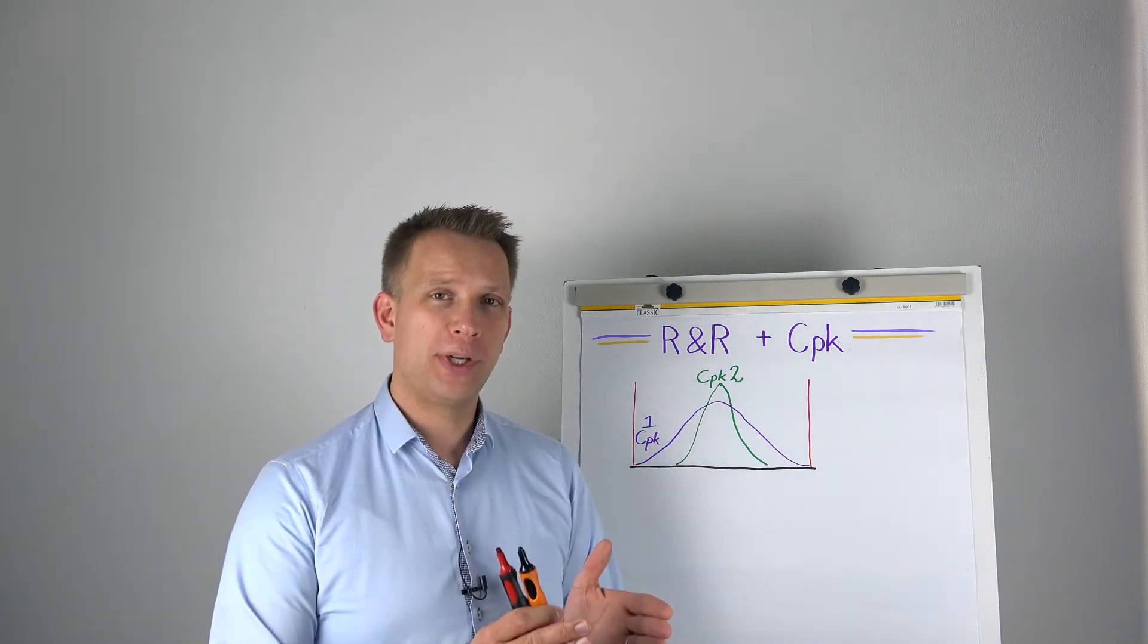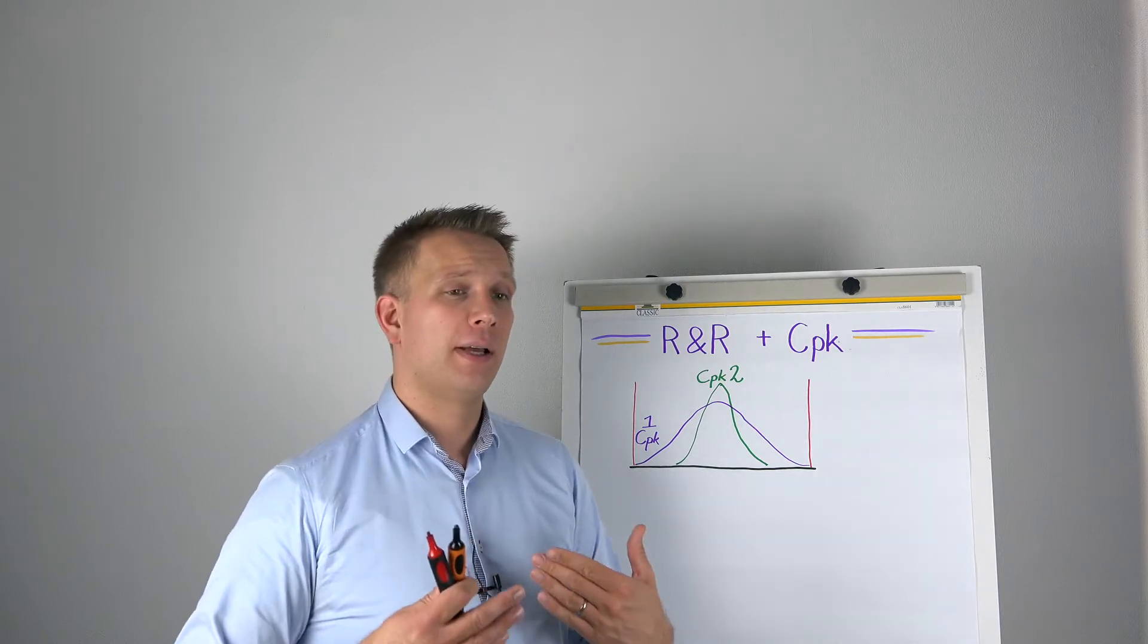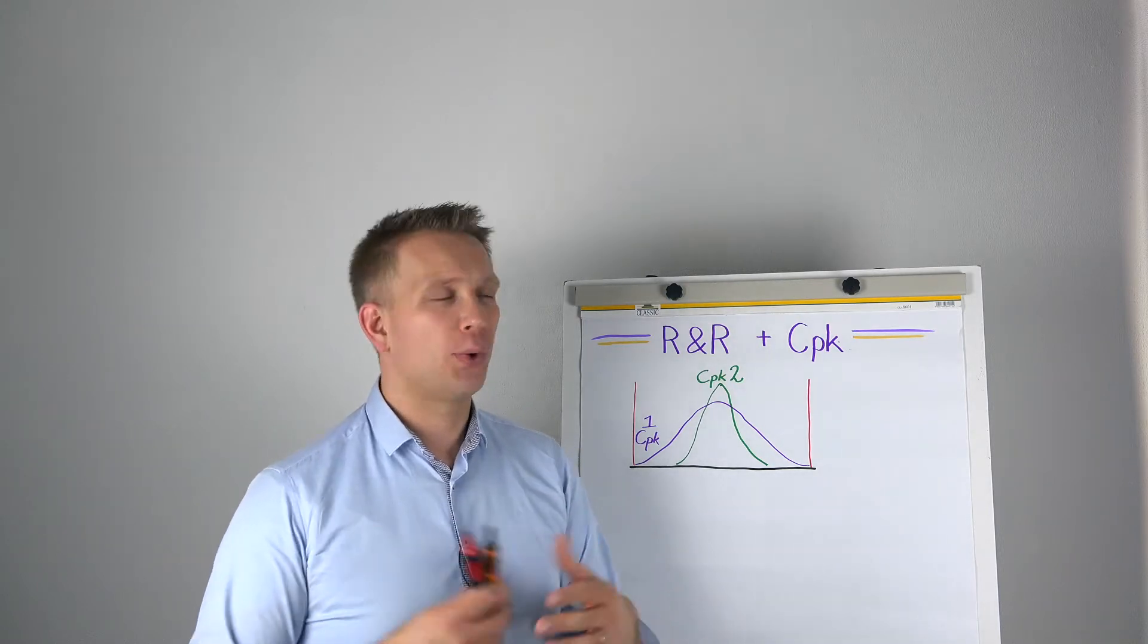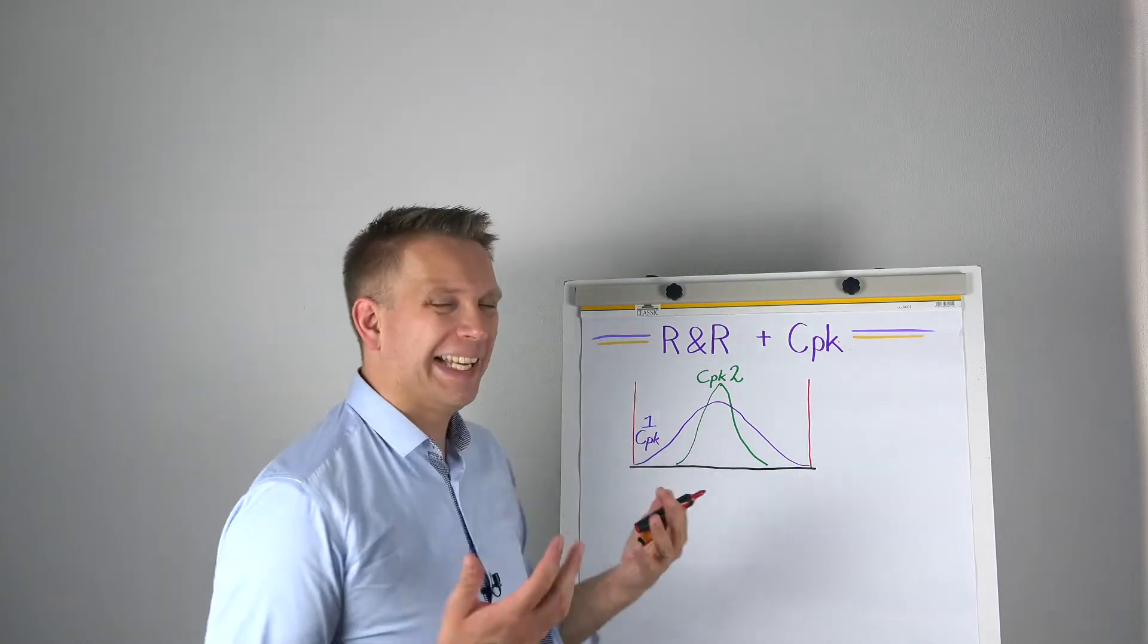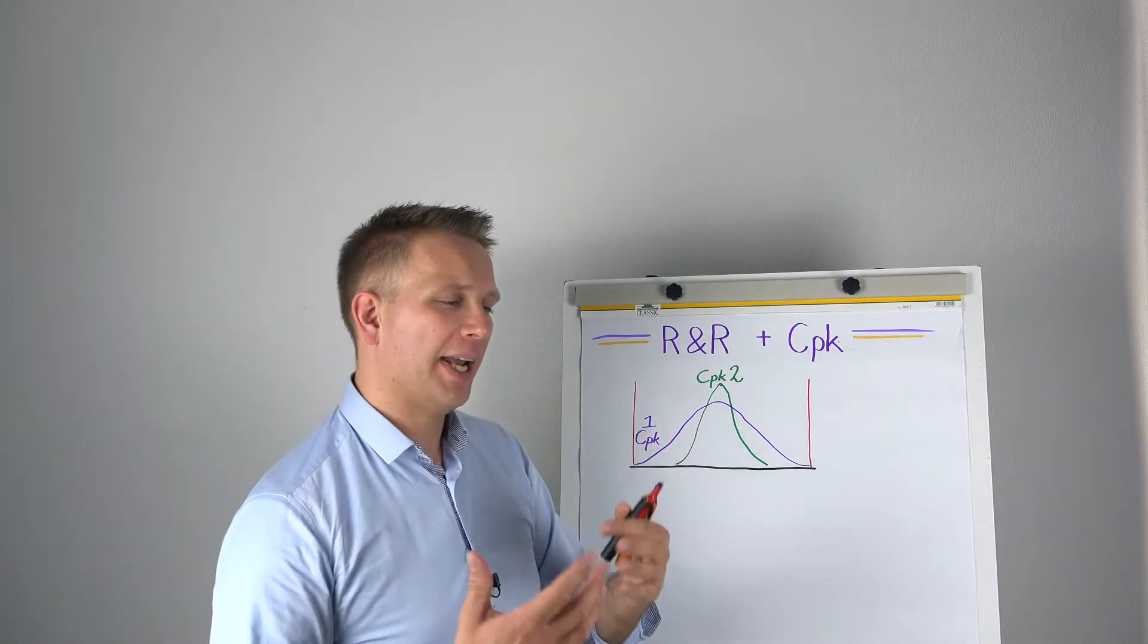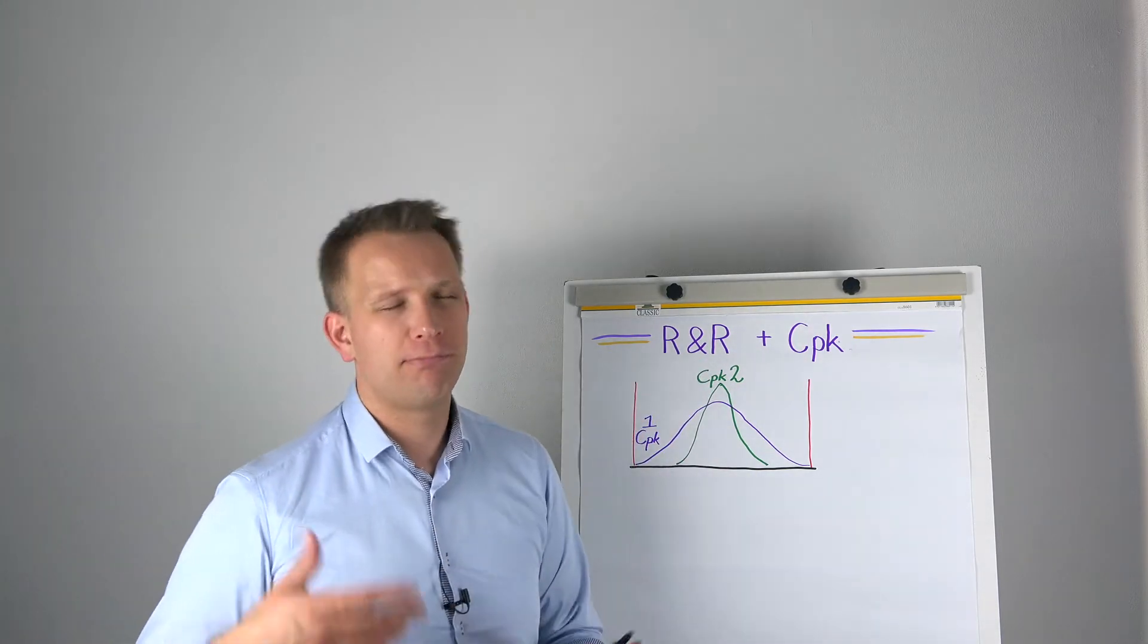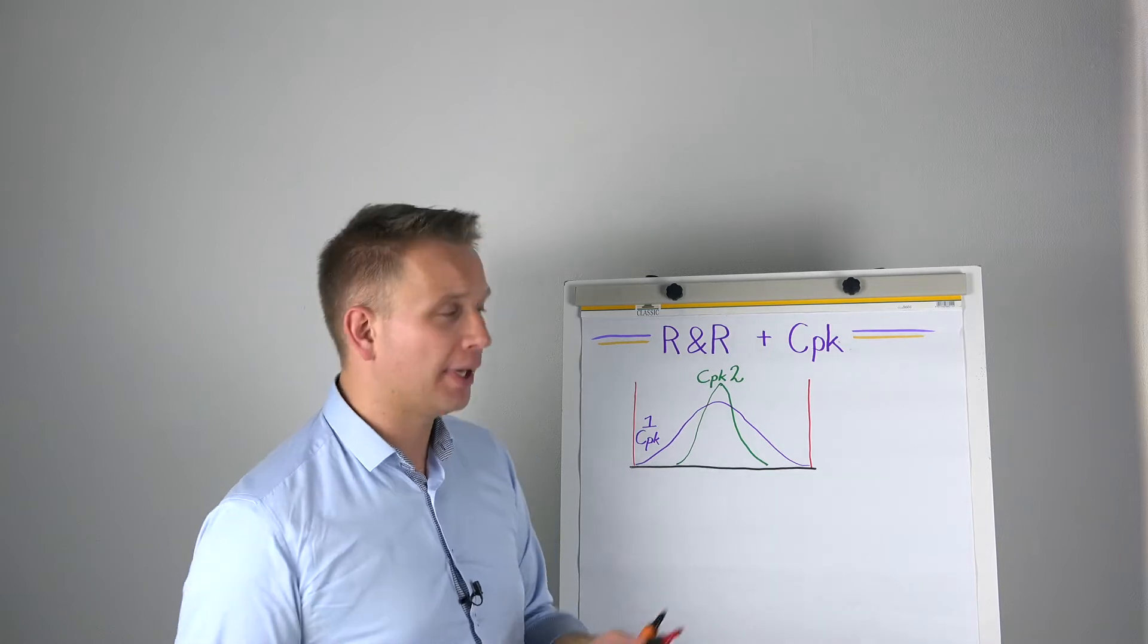But any measurement we do will also have a bit of variability, a bit of imprecision. So there is this gauge, so there is this measure of a measurement. So we check how repeatable, how reproducible R&R a gauge, so any type of measurement equipment, is.